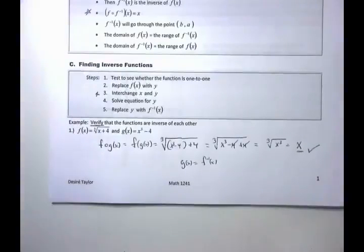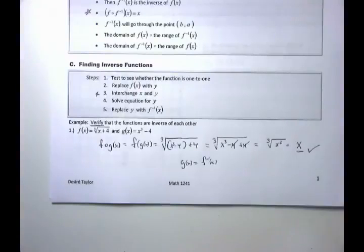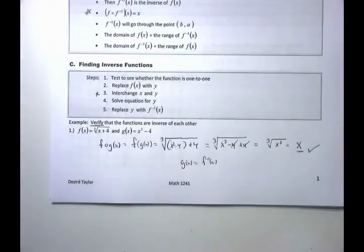For every problem that says 'verify,' they'll give you two functions and ask if they're inverses — yes or no? This composition method is the fastest way. You can do it the other way by finding the inverse algebraically, but you'll see that's sometimes longer.